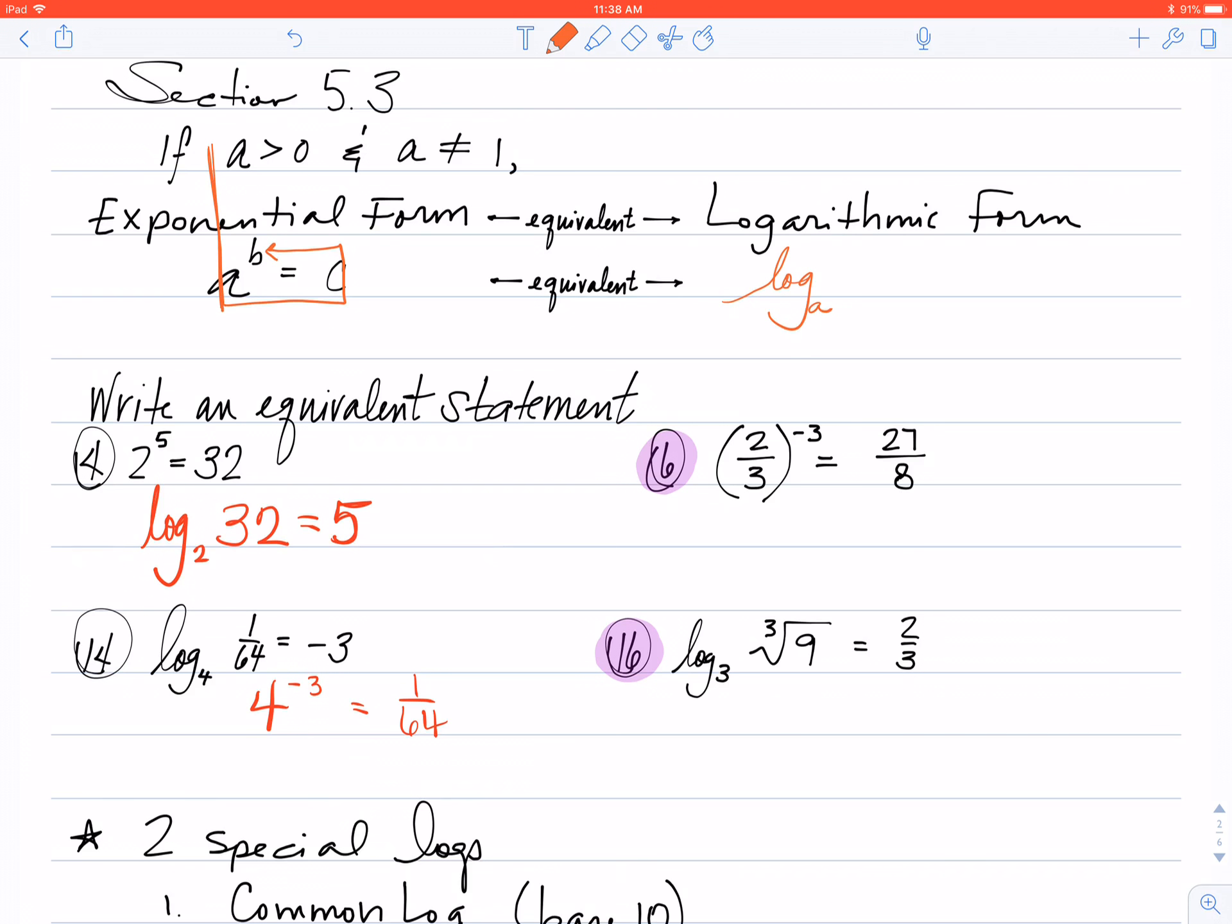And just like the word 'base' implies, this is written a little bit lower than the rest of that word log. Log base a - the next number I hit is c. So log base a of c equals my power b.